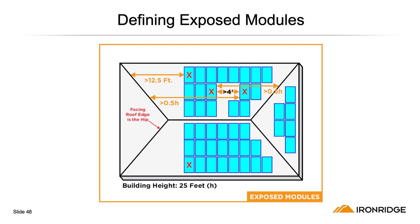Another term to get familiar with is exposed modules. For a module to be considered exposed, two things have to be true. Number 1, the distance from the module's free edge to its facing roof edge is greater than half the building height. And number 2, the distance from the module's free edge to an adjacent array or panel is greater than 4 feet. This rule applies regardless of pitch or type of roof.